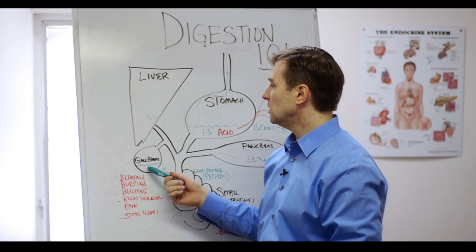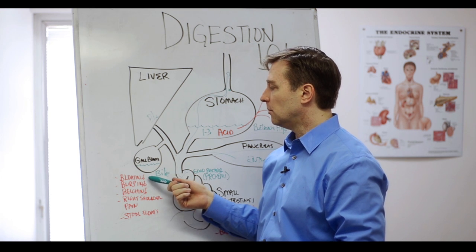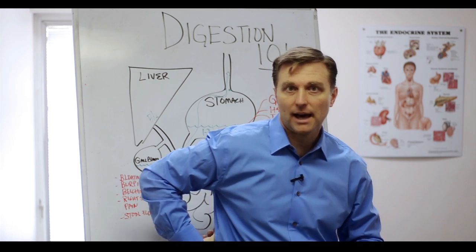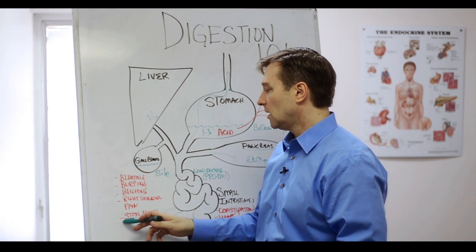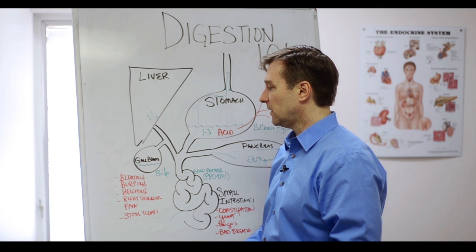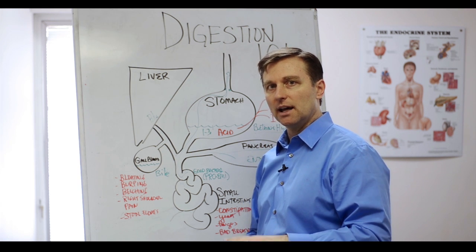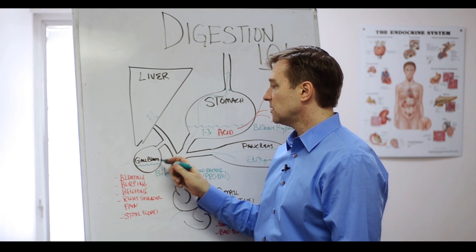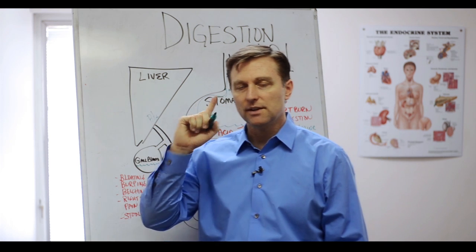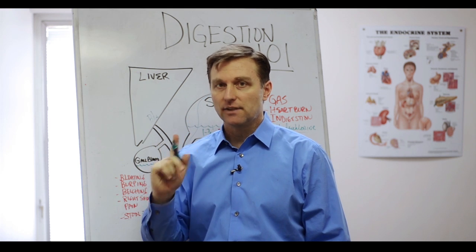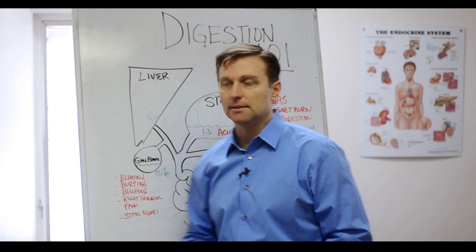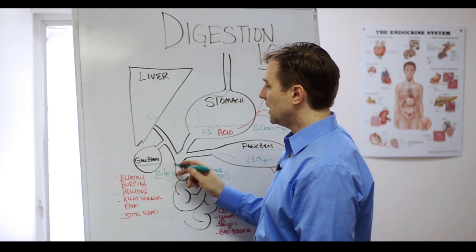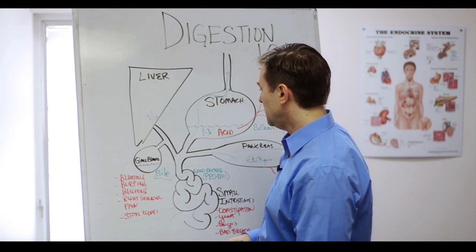So the way you know you have a gallbladder problem is if you get bloating, burping, belching, right shoulder pain because it refers there or around the back and the scapula, or your stool will start floating because you're not digesting the fat. So it just kind of hangs out on top. Also you're going to have deficiencies in the vision. So the eyes, you can't see at night, that's vitamin A deficiency, and then real dry skin. And then you would need some good bile support. And I use a gallbladder formula for that one with a meal.